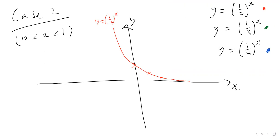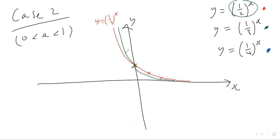How about y equals one third to the power of x? Again, one third to the power of zero gives one, so it passes through at one. When you plug in bigger x values you get smaller and smaller y values, so it's a bit more shallow going to the right. But on the negative side it's steeper — plugging in x equals minus one gives one third to the power of minus one, which is three, and three is bigger than a half to the power of minus one, which is two. So the green graph y equals one third to the x is steeper on the negative side.